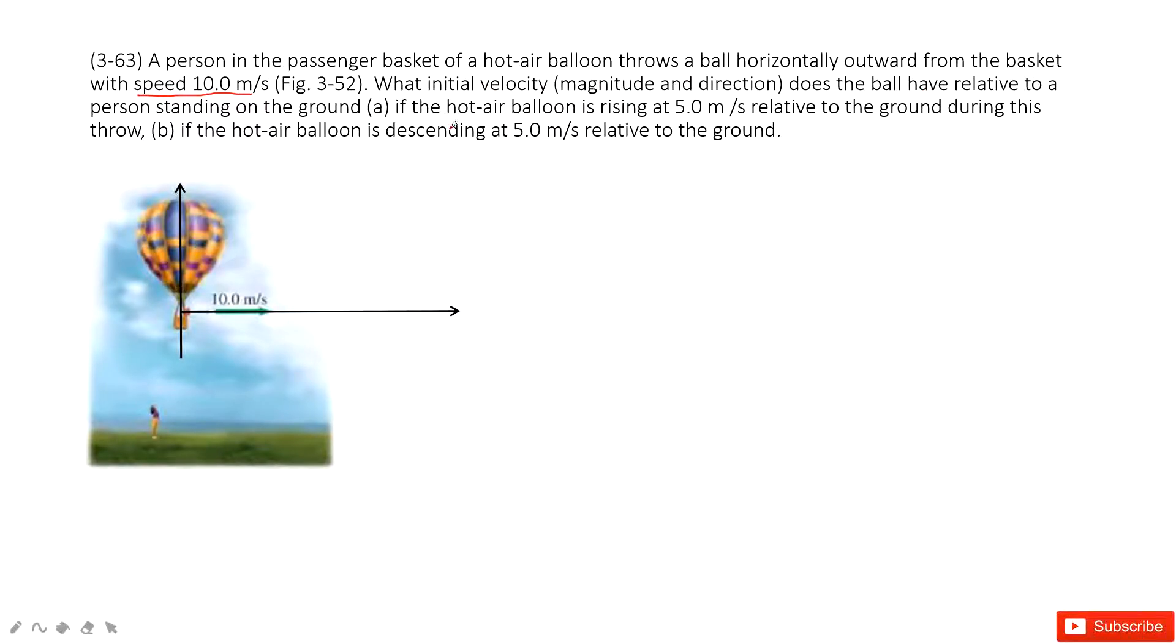So the first situation is this object is raised 5 meters relative to the ground. When we solve these problems, we look at there is an object. First one, it carries a horizontal velocity 10 meters per second. And then vertically, it tells us at initial, this hot air is rising at 5 meters relative to the ground.